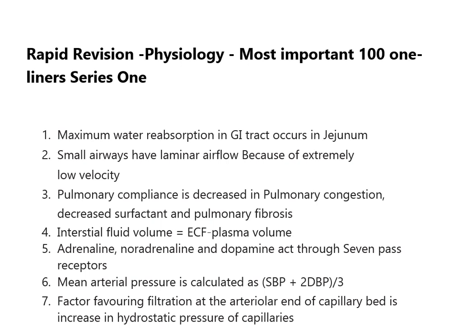Maximum water reabsorption in GIT occurs in the jejunum. Small airways have laminar airflow because of extremely low velocity. Pulmonary compliance is decreased in pulmonary congestion, decreased surfactant, and pulmonary fibrosis. Interstitial fluid volume is equal to ECF minus plasma volume.